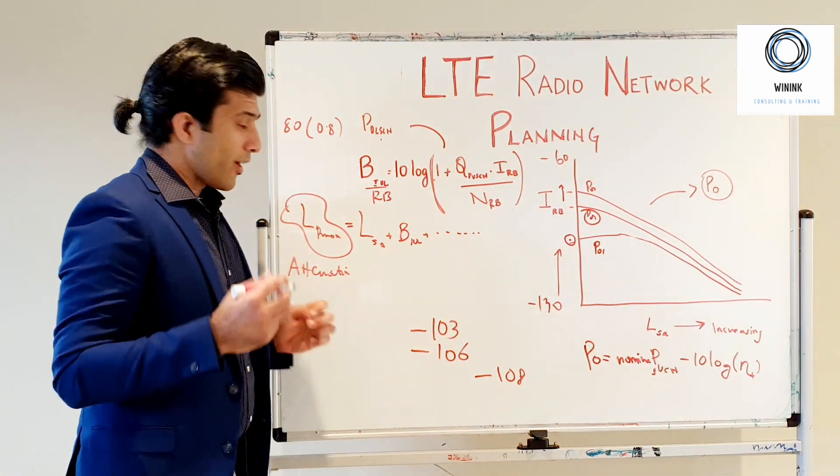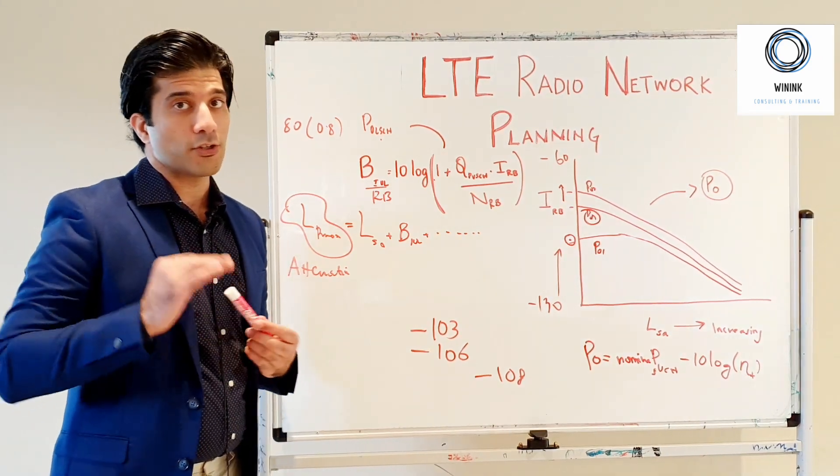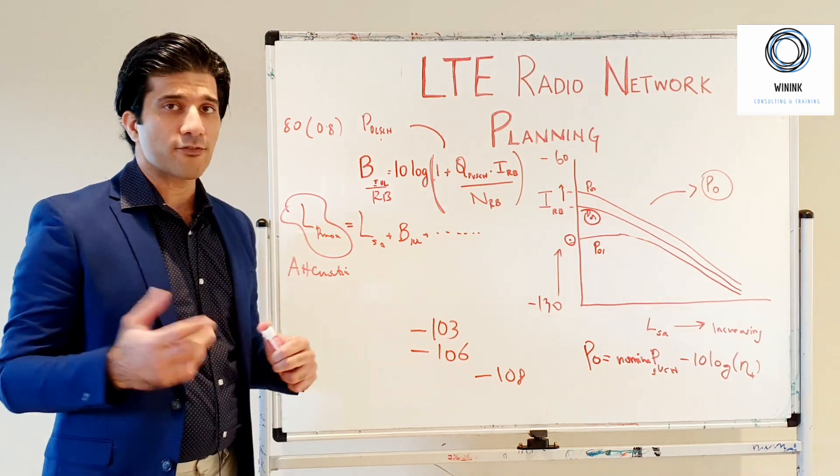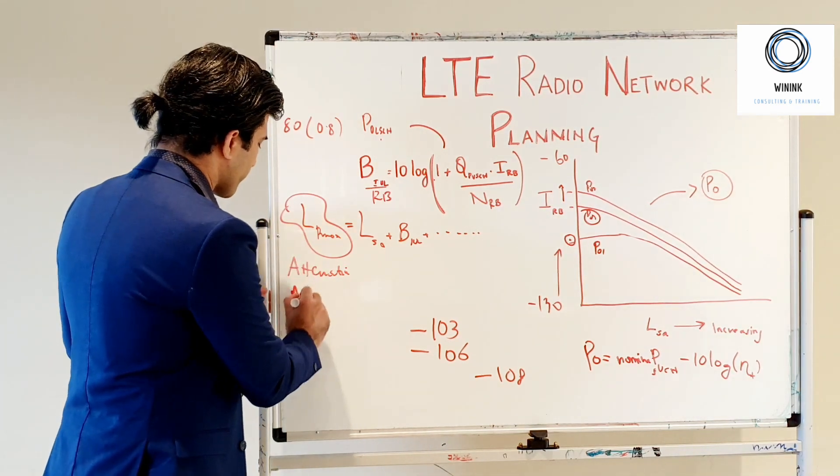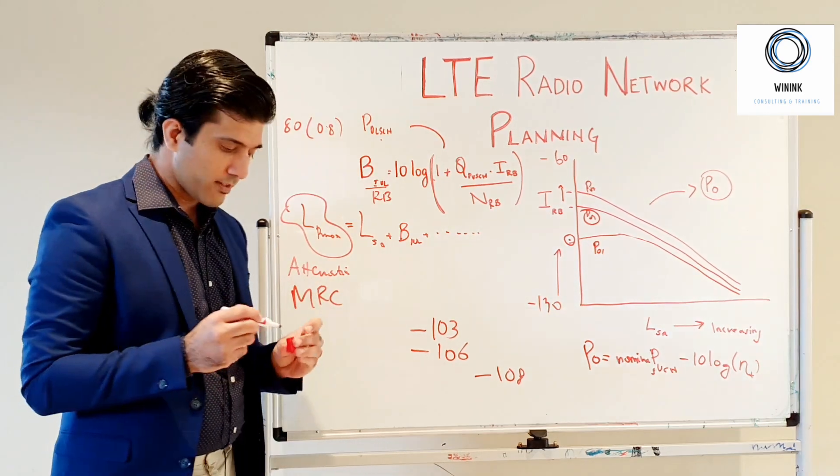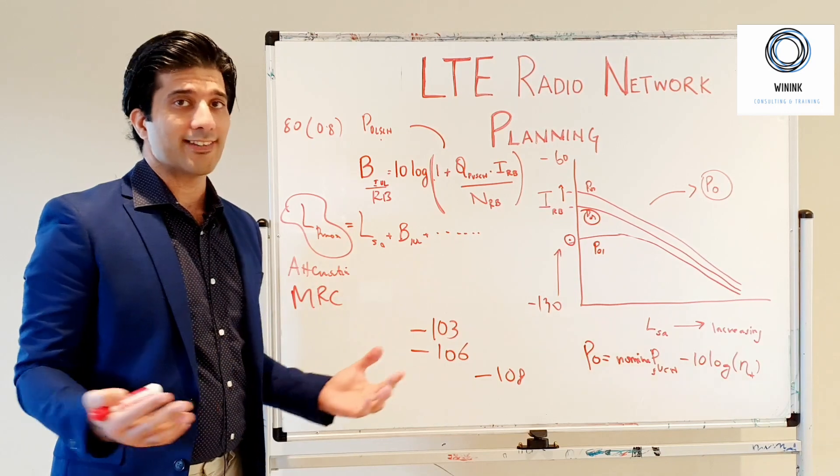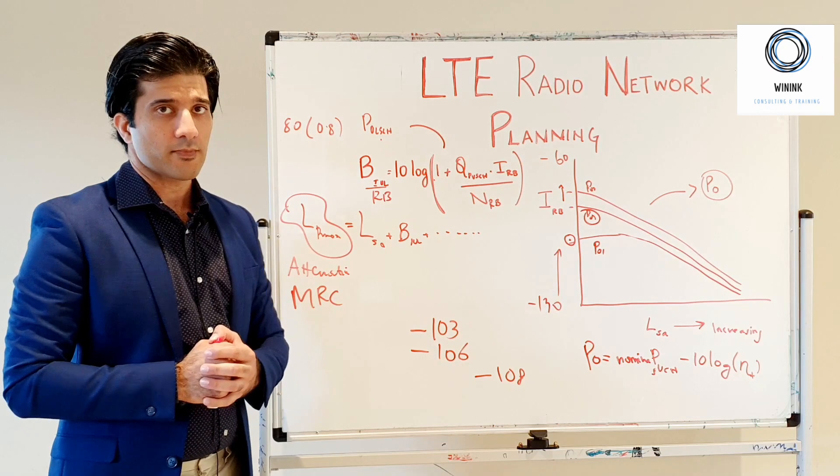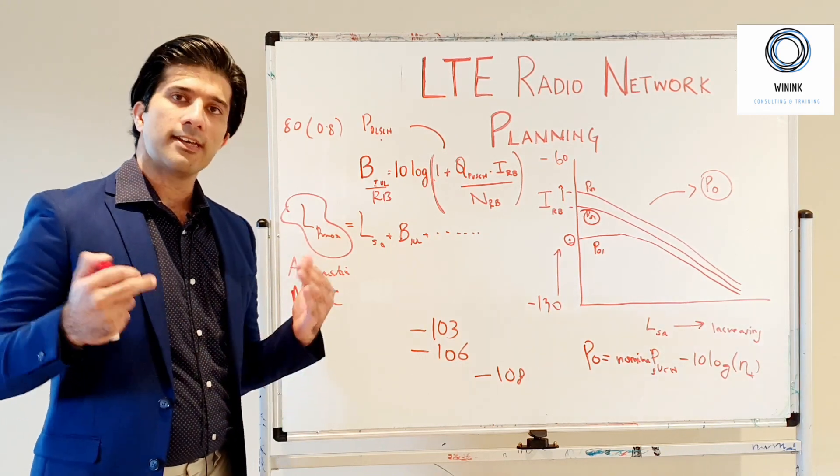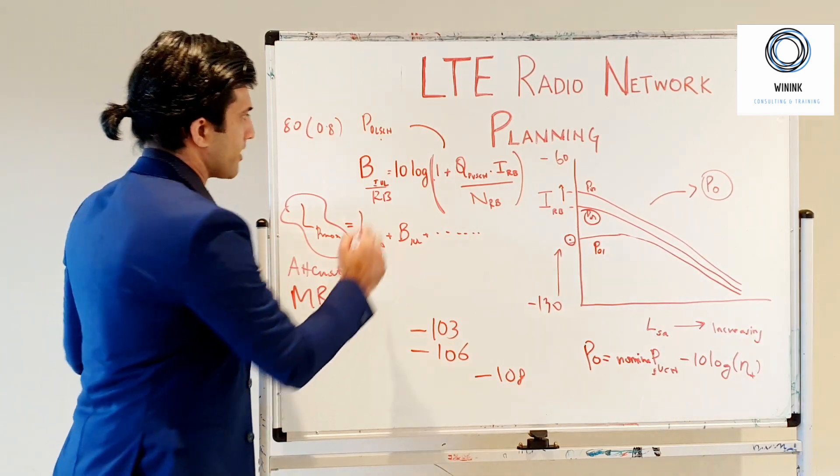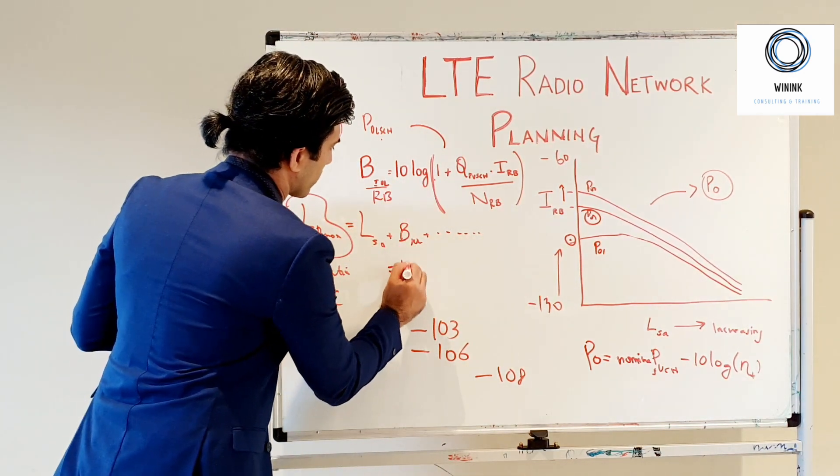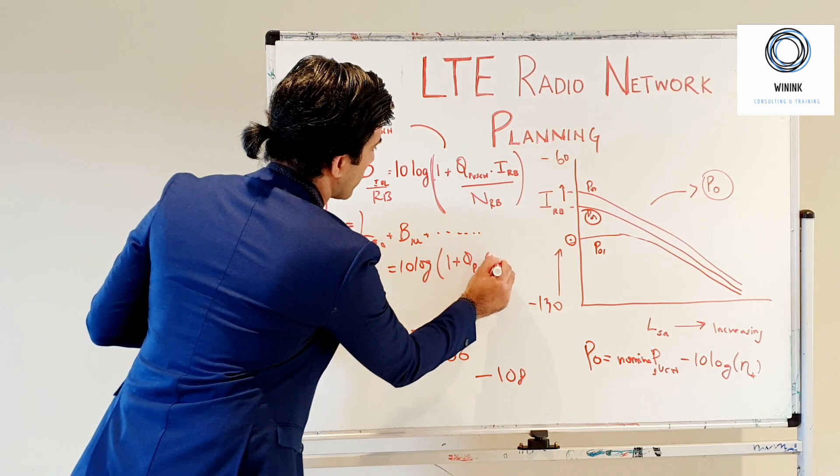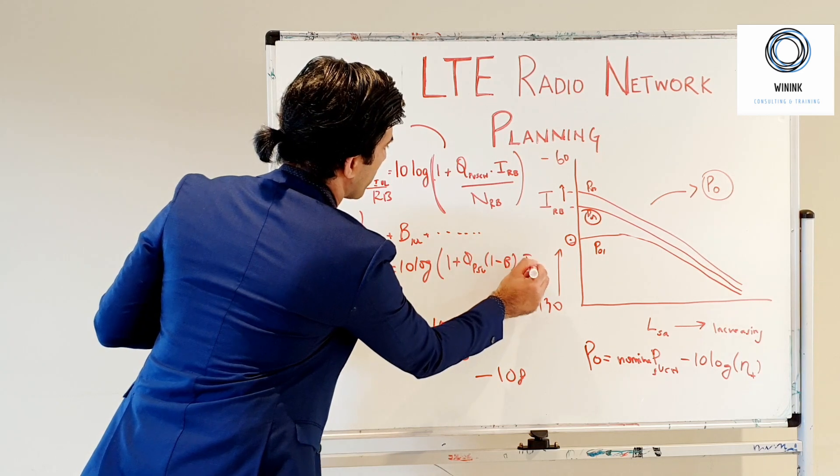Another important aspect in terms of noise rise is how you are combining your received signals. Usually if you're using MRC, that is your maximum ratio combining, you are basically combining all the signals received without any interference rejection. Then you have this formula. If you are using IRC, that is interference rejection combining, then you add a factor like this: then log one plus Q_PUSCH times one minus beta times I_RB.